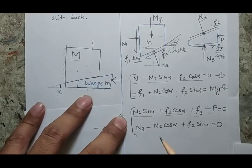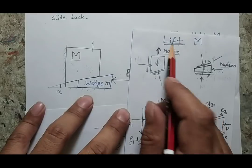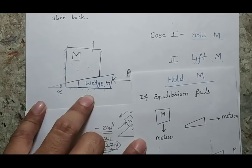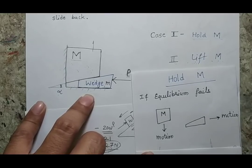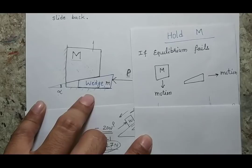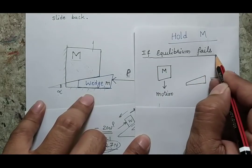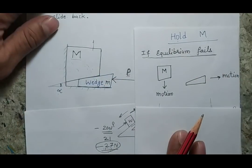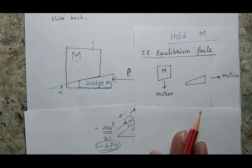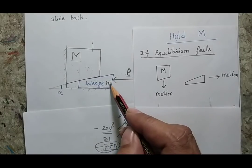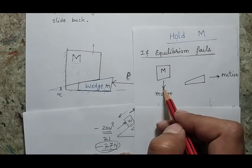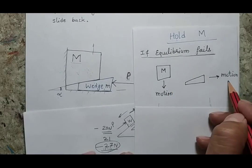These are the equations derived for wedges when we want to lift the body. Now for the other case where I want to hold the body in this position, I again start with the same philosophy: if equilibrium fails in the holding case, what would be the direction of motion? If I am not able to hold mass M, the mass M will fall and the wedge will move in the rightward direction.